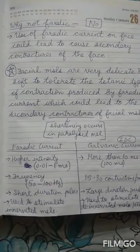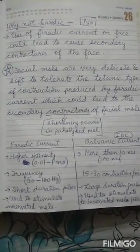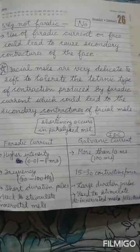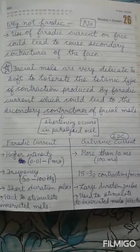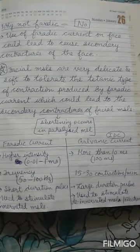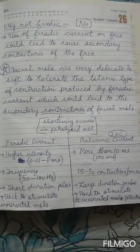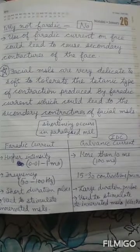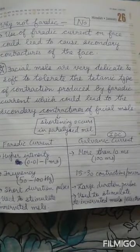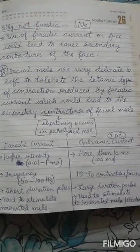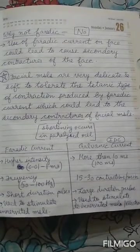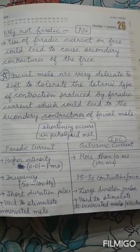We are not using faradic current because its use on the face can lead to secondary contractures. The facial muscles are very delicate and soft and are not able to tolerate the tetanic type of contraction produced by faradic current, which leads to secondary contractures — mainly shortening of the paralyzed muscles. So we use galvanic or interrupted direct current for facial palsy, and faradic type current is not used.